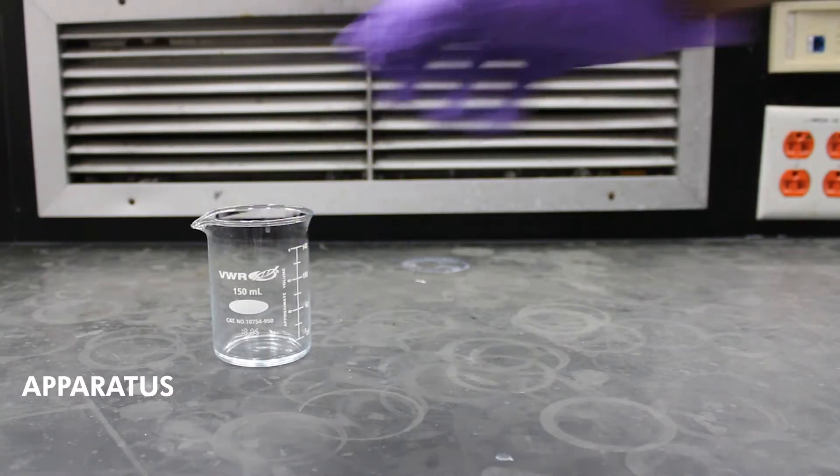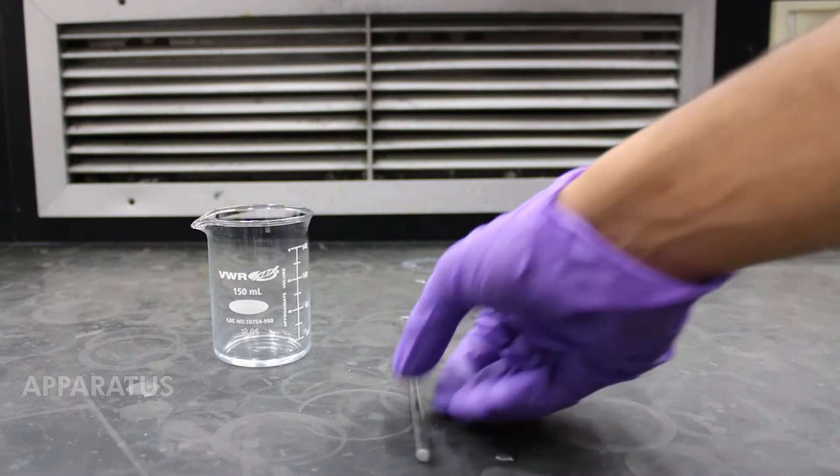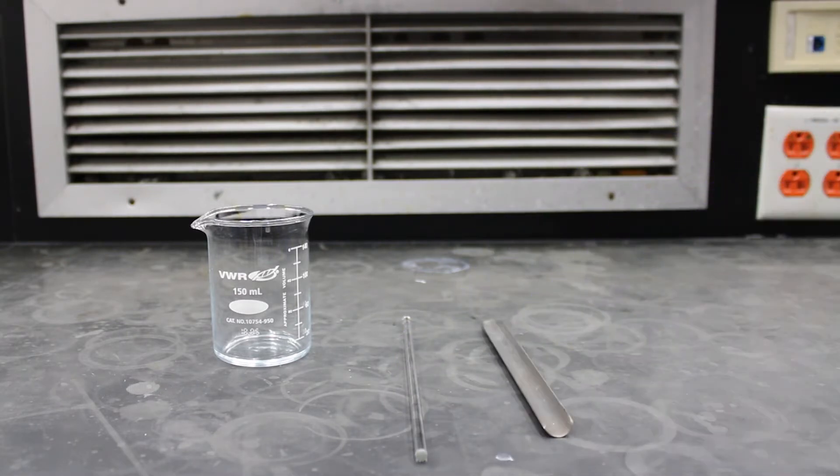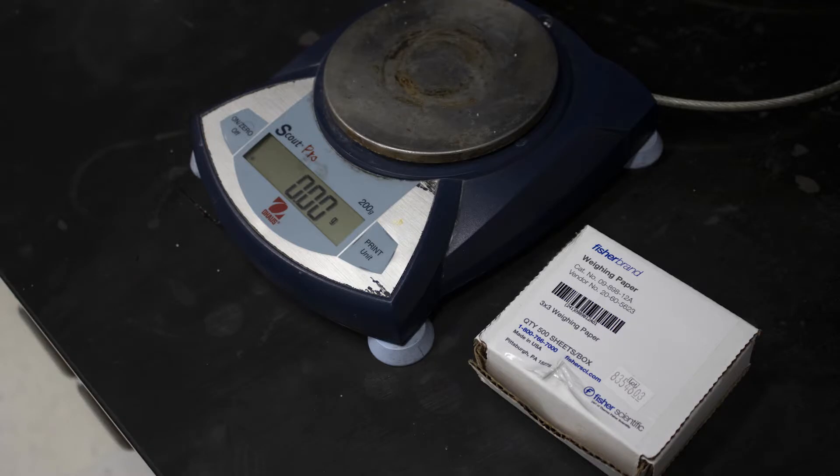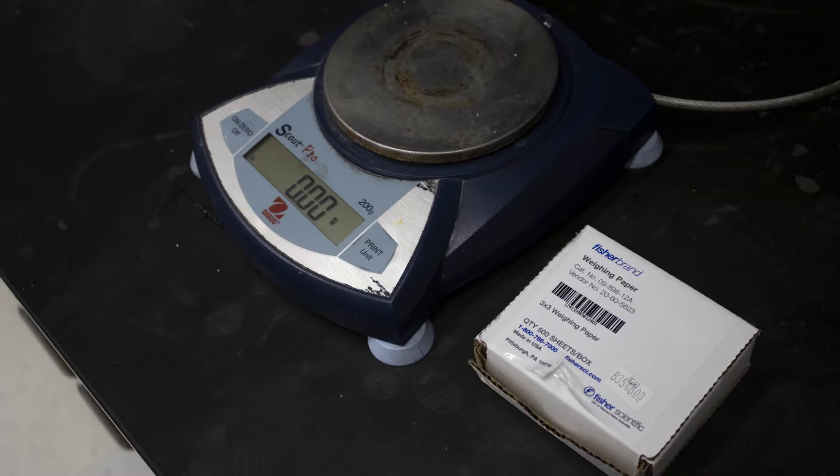For this experiment we will use a 150 ml beaker, glass rod, spatula, and a 50 ml graduated cylinder. You will use the common weighing scale and the weighing paper provided.